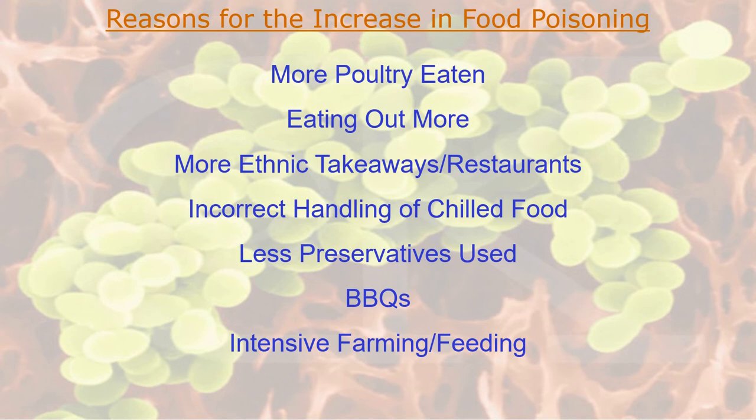Another reason for the increase in food poisoning, especially during summer, is the use of barbecues. There are two reasons barbecues are a problem. First, you're dealing with raw and cooked food together — and a question that might come up in the exam is what you should always do with raw and cooked food: you must always keep them separate. When cooking meats on the barbecue, you must ensure the raw meat doesn't come into contact with the cooked meat.